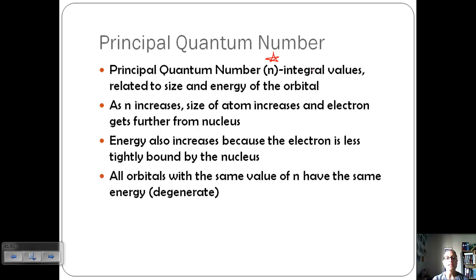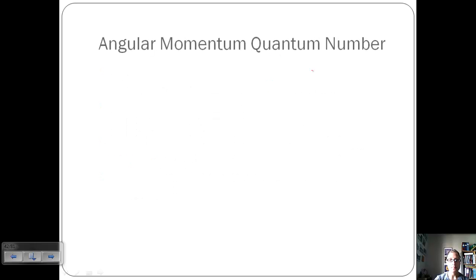All orbitals with the same value of n have the same energy. We're going to talk about these letters in a minute, but we could have a 3s, a 3p, a 3d. And so because they all have the same value of n, they have the same energy.